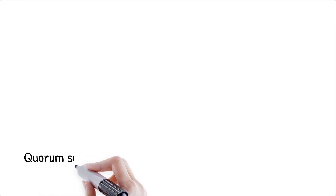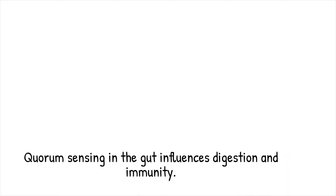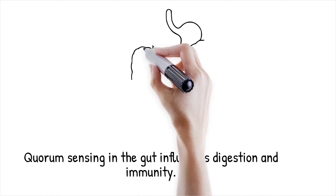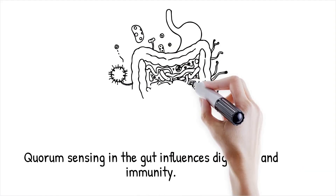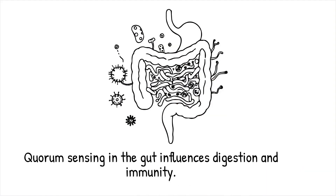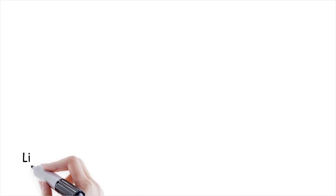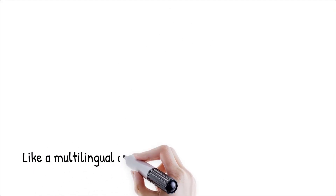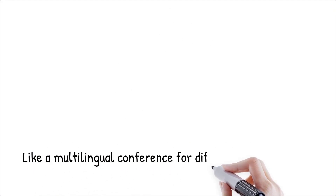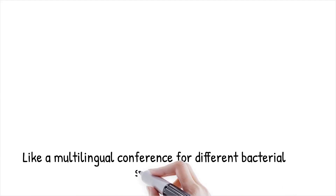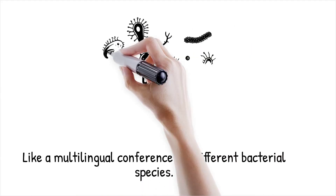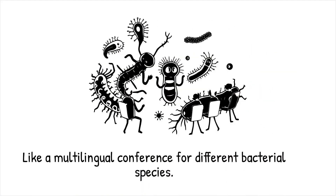In the gut microbiome, quorum sensing facilitates interactions between commensal bacteria, influencing host digestion and immune function. Interspecies quorum sensing is like a multilingual conference, where different species exchange information to achieve common goals.